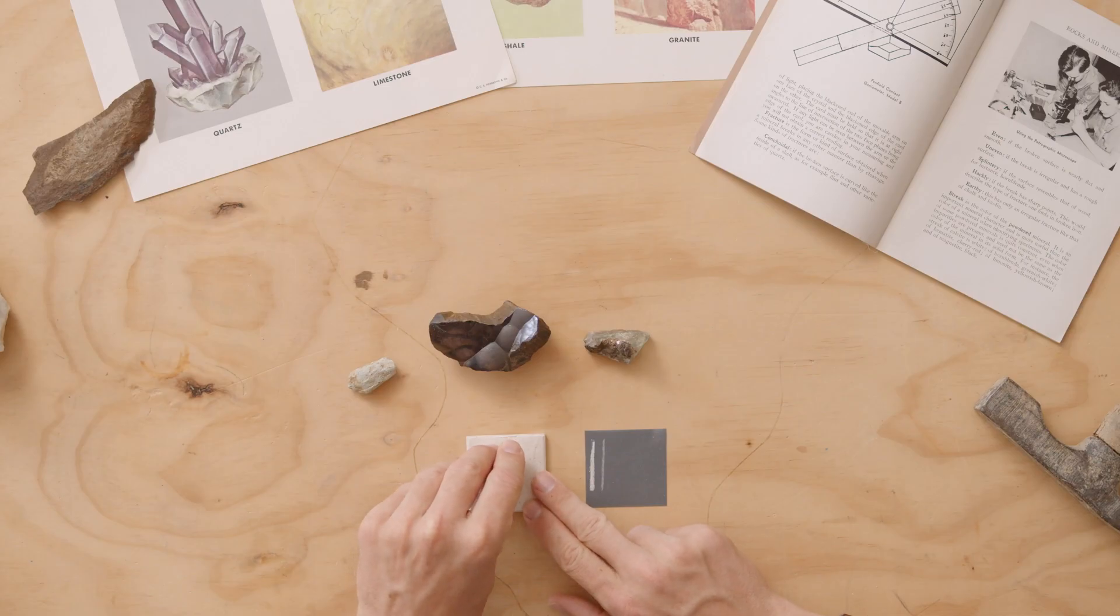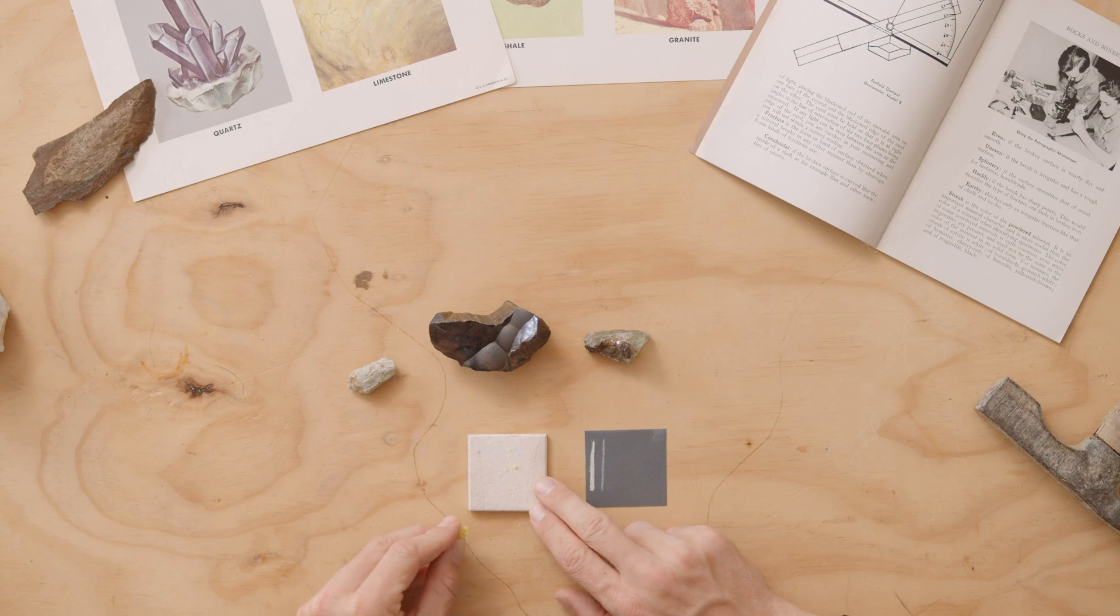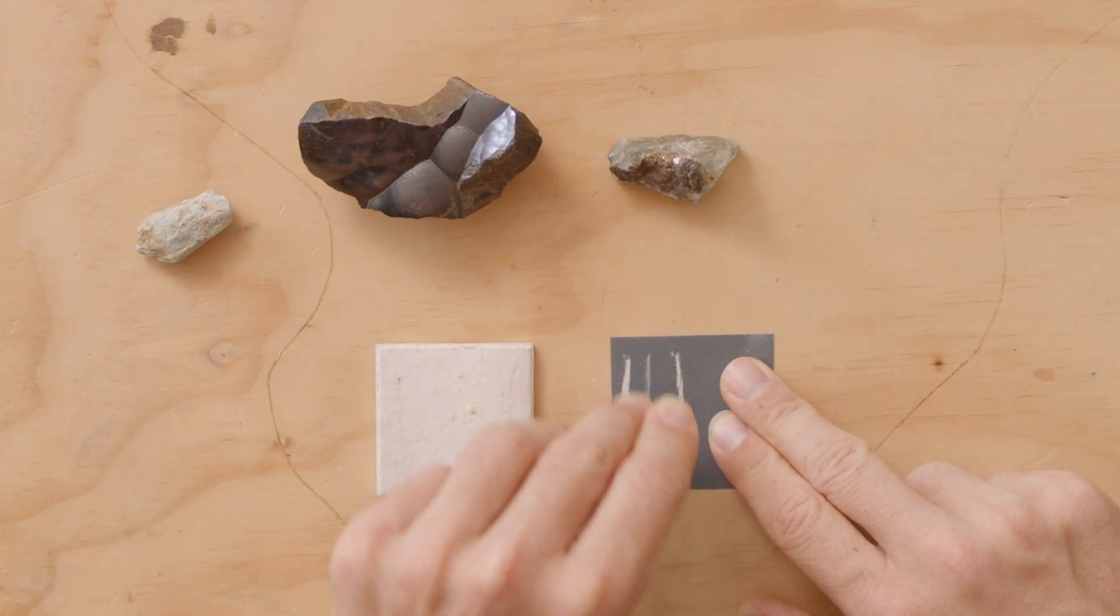Next is sulfur. It leaves a yellowish mark on the white, and on the black it leaves a whitish-yellowish mark.